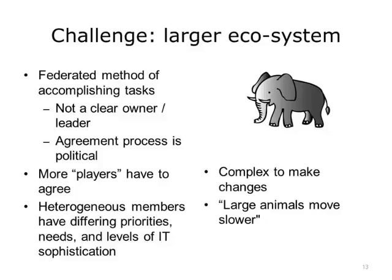When you have problems agreeing, people tend to agree not to agree, so they tend not to act. Not only are there more players that have to agree, but we are talking about heterogeneous members with different priorities and needs. The needs for a home health agency are different than those for a long-term care agency, than those for a primary care provider, than those for a specialist, than those for an acute care hospital, a psychiatric hospital, a critical access hospital, a community hospital, or a large academic medical center. There are also other players such as public health authorities, labs, and insurance companies. And that adds complexity, meaning it is complex to make changes.